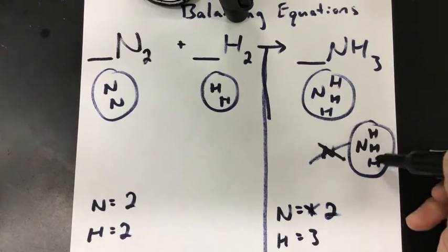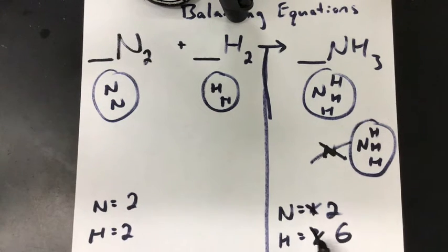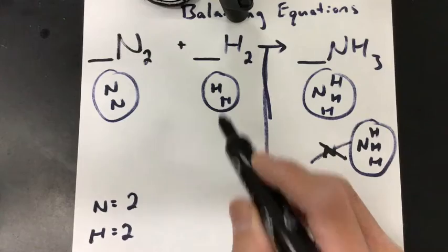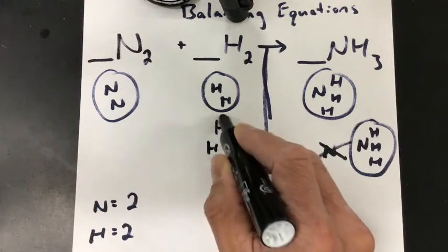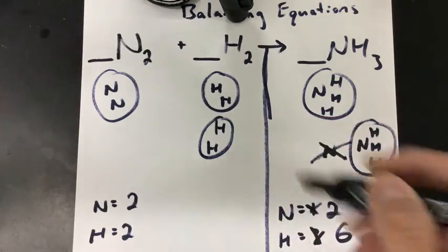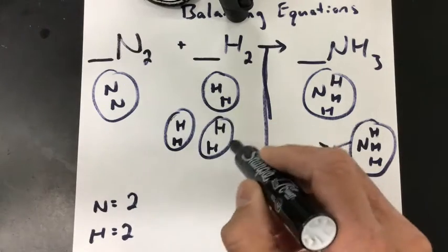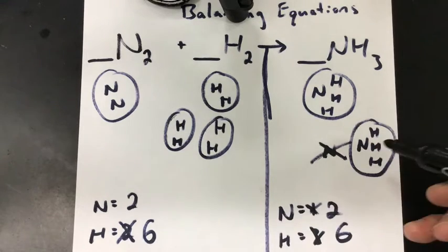So now my H's are not balanced. I have a lot more H's over here than I do over here. So I'm going to take, and that tells me that I need more H's on this side. Remember I can't add H's by itself. I have to add H's together. So now I have four. Well, I can go one more because I know I need six. Now I see that I have six H's. So I have six right here. And now these are even.